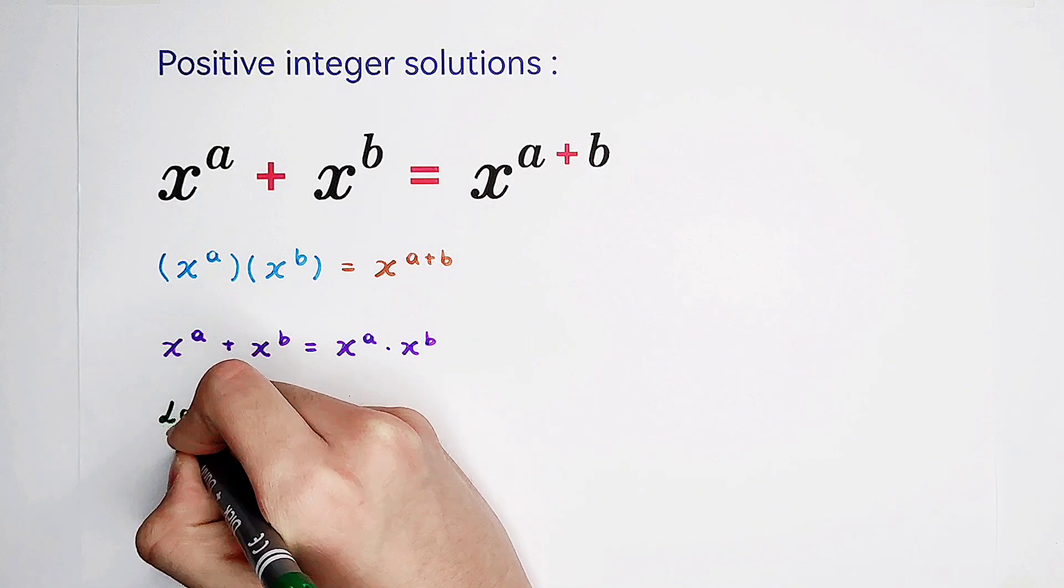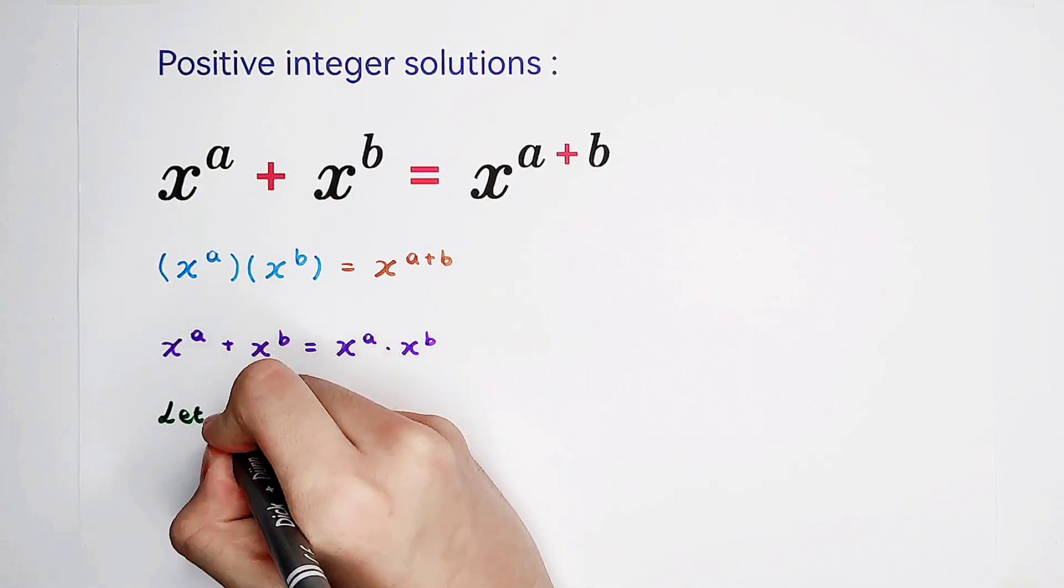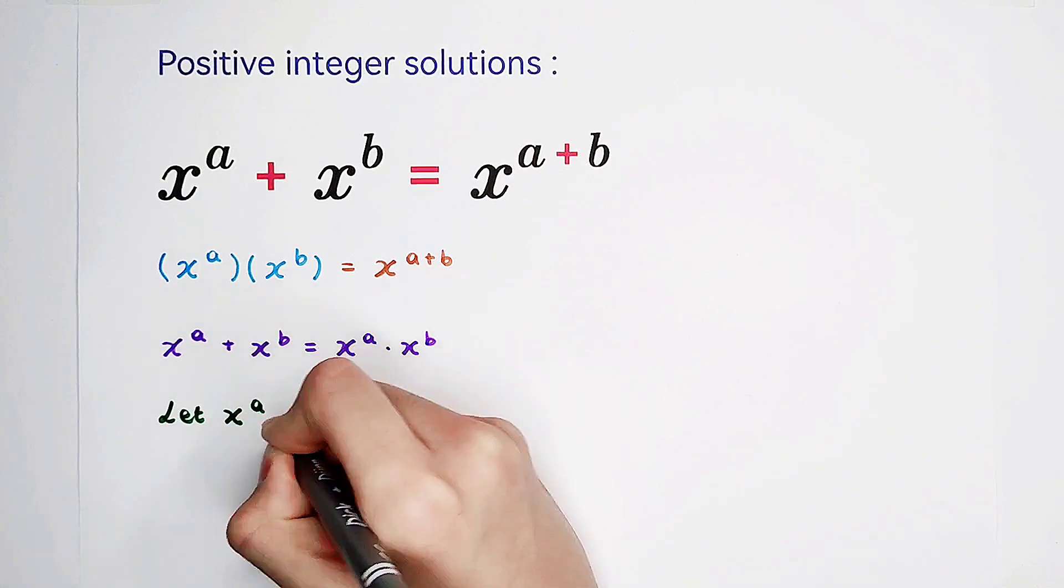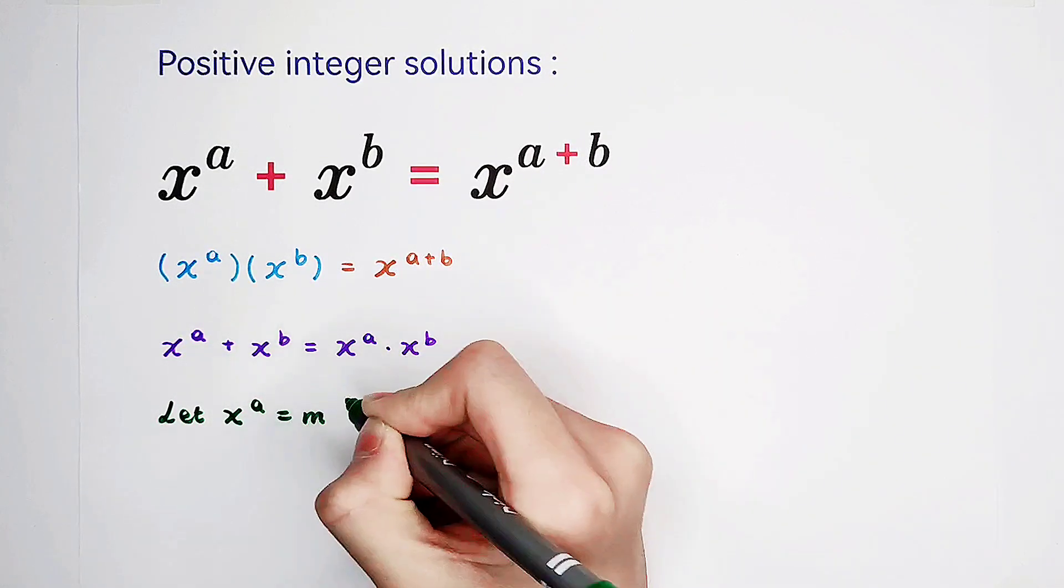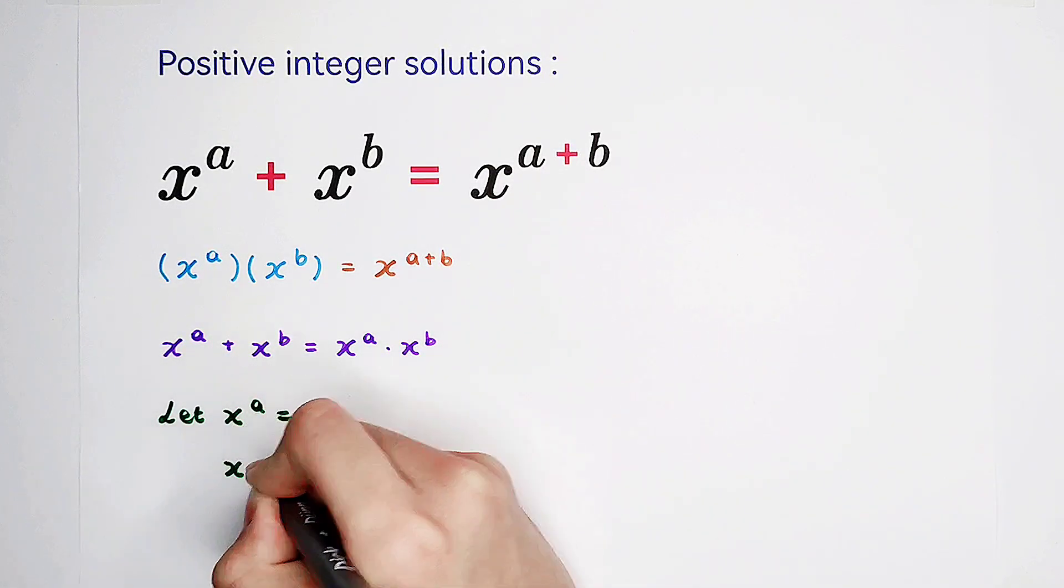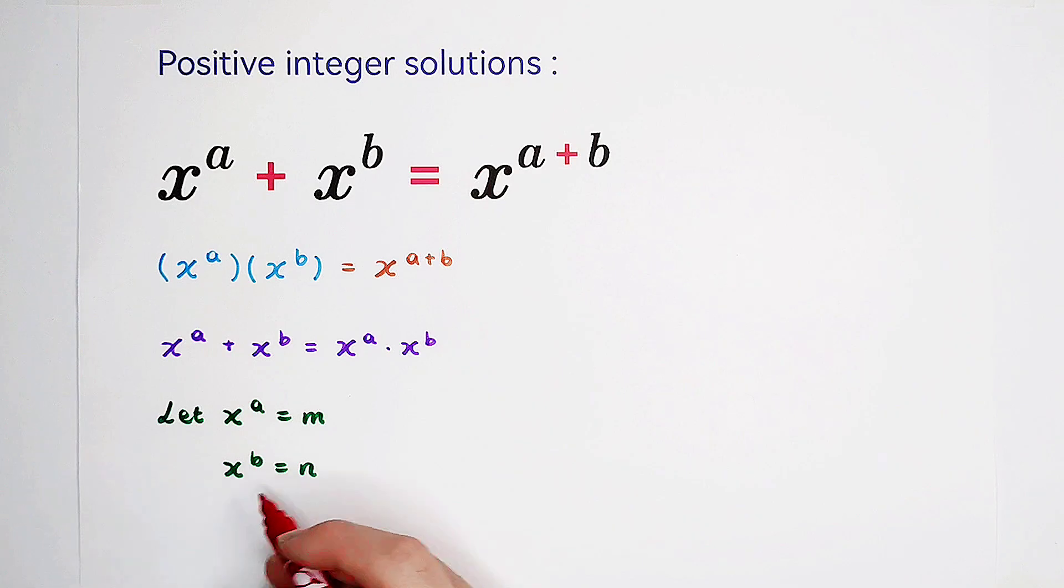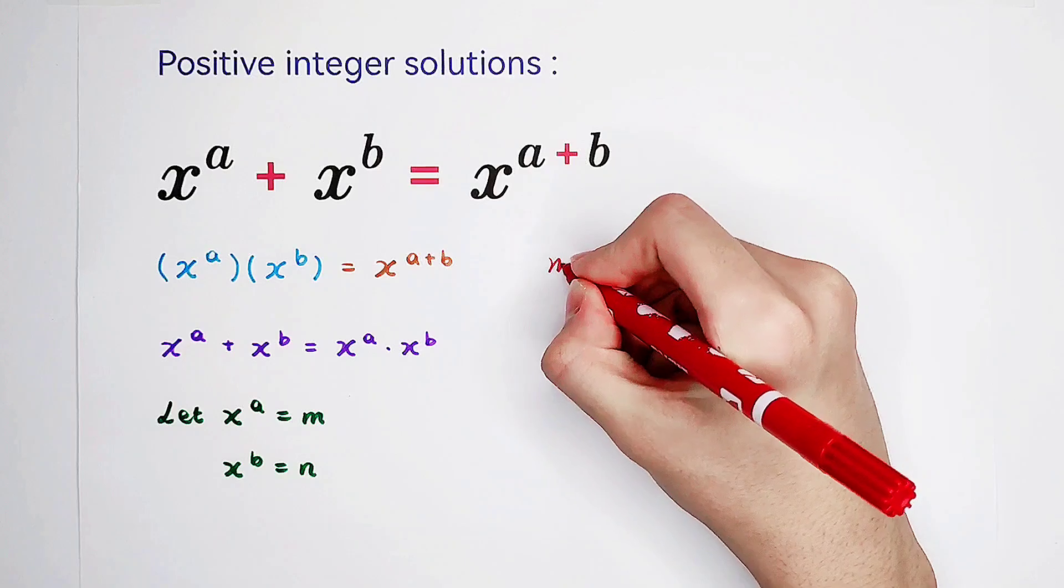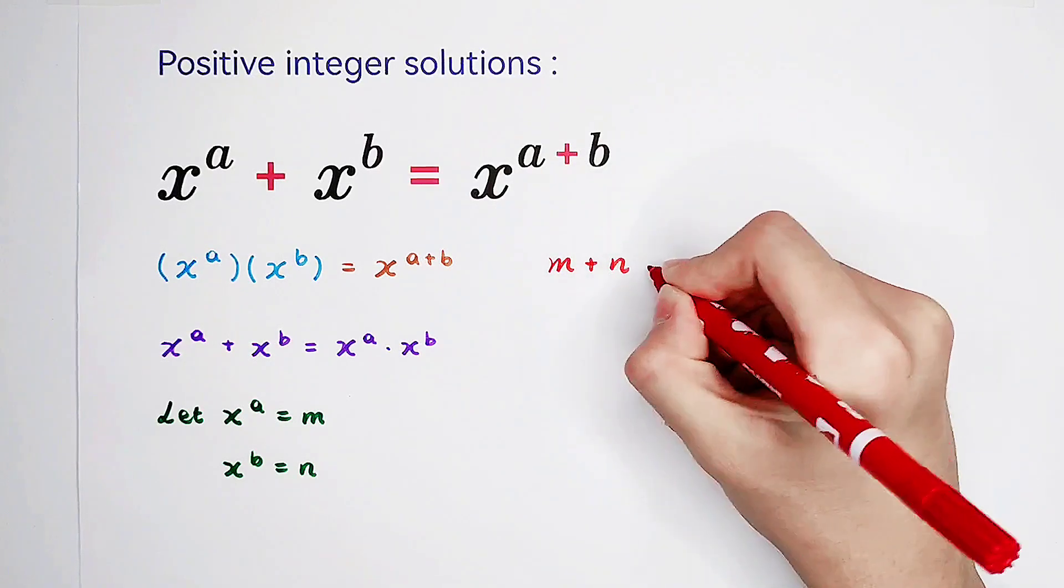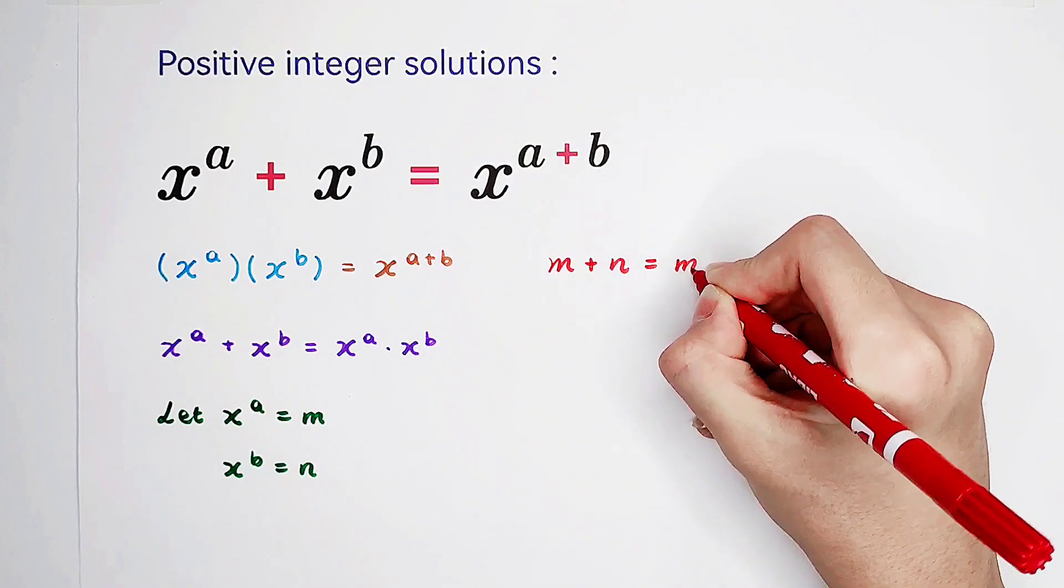We can let x to the power of a be m, x to the power of b be n. And then we will get m plus n equals m times n.